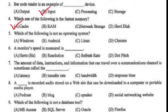Which of the following is not an operating system? Chrome. Processor speed is measured in hertz.